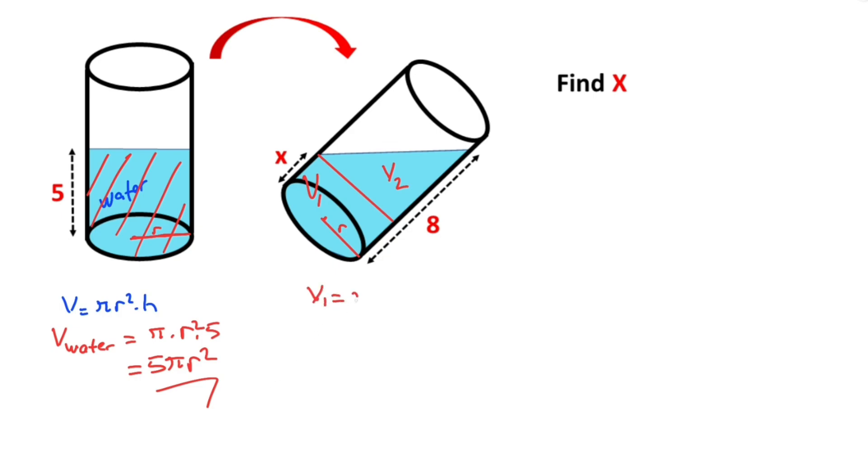Therefore, v1 equal pi r squared times height. Height equal x, so v1 must be equal x times pi r squared.